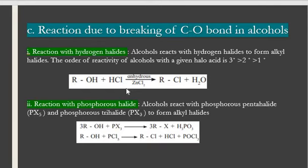If you talk about the reaction of alcohol with phosphorus halides: if the reaction is between alcohol and phosphorus trihalide, you will get alkyl halide and phosphorous acid. If the reaction is between phosphorus pentachloride with any alcohol, you will get alkyl chloride, hydrogen chloride, and phosphorus oxychloride as the products.